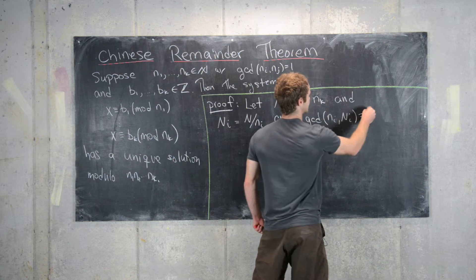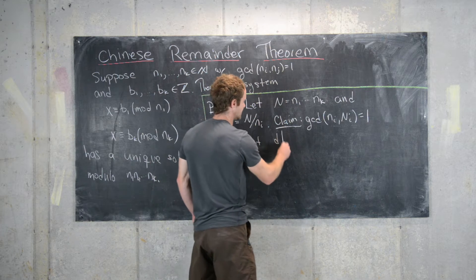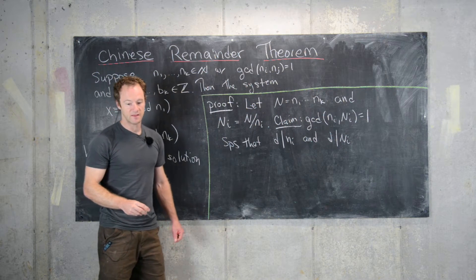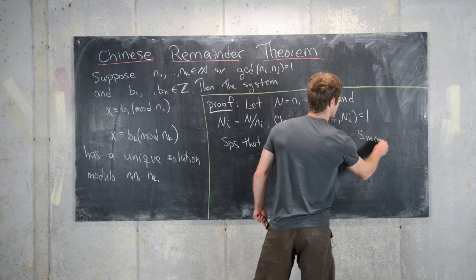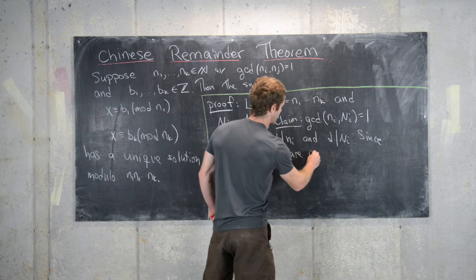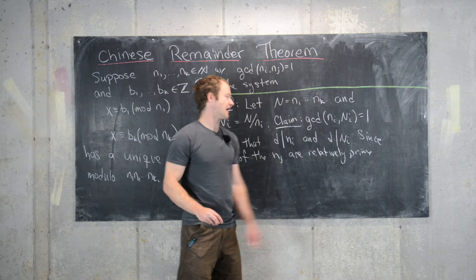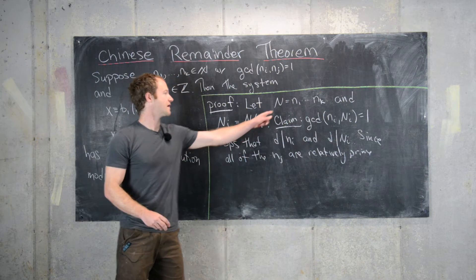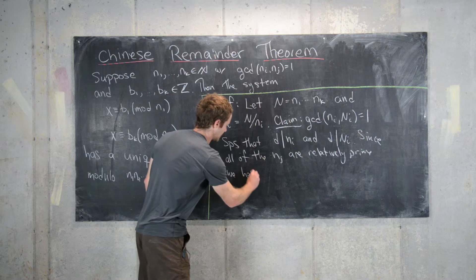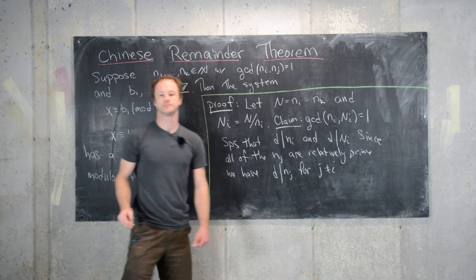So we want to show that GCD(n_i, N_i) = 1. Suppose that d divides little n_i and d divides capital N_i. Since all of the n_j are relatively prime, that tells us that d must divide one of the components of N_i — in other words, it must divide one of the little n's that is not n_i. So d divides n_j for some j not equal to i.